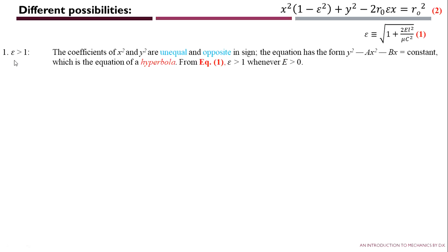Using this equation we have different possibilities depending on the value of eccentricity ε. The first condition is if ε is greater than 1. In this case, the coefficient of x² is negative because ε² is greater than 1, but the y² term has a positive coefficient. So the coefficients of x² and y² are unequal and opposite in sign. The equation has the form y² minus ax² minus bx equals a constant, which is the equation of a hyperbola. From equation one, ε greater than 1 corresponds to E greater than 0.